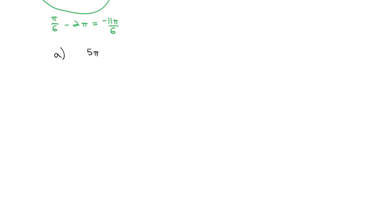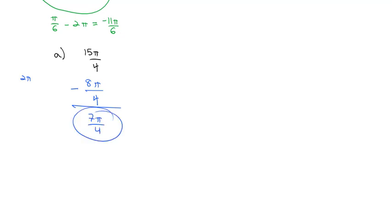Let's try an example. Starting with 15π/4, to get a coterminal angle we subtract 2π. Keeping the common denominator of 4, we subtract 8π/4. That gives us 7π/4 as our coterminal angle. Counting by fourths — the quarters — 1, 2, 3, 4, 5, 6, 7 — there is the angle at 7π/4, which is coterminal with 15π/4.